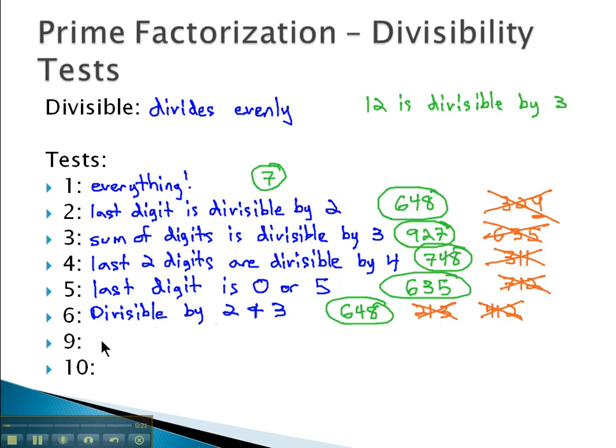But nine's a nice little test. It's similar to the test for three in that we look at the sum of the digits or we add the digits together. And we want to know if the sum of the digits is divisible by nine. So for example, if I had the number 936 and we wanted to add these digits together, nine plus three is twelve, twelve plus six is eighteen. We can divide eighteen by nine, and so that tells me that the entire number is divisible by nine.